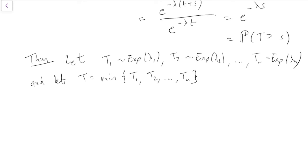The way I think about this is imagine I've got n alarm clocks, and each of my alarm clocks, my first alarm clock is going to ring after an exponential λ1 amount of time, and my second alarm clock is going to ring after an exponential λ2 amount of time, up to my nth alarm clock is going to ring after an exponential λn amount of time. And so T is the amount of time until the first alarm clock rings.